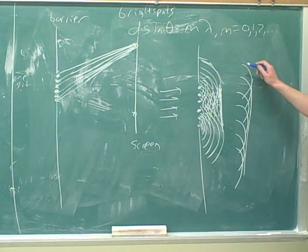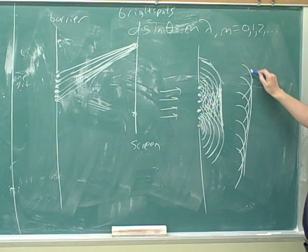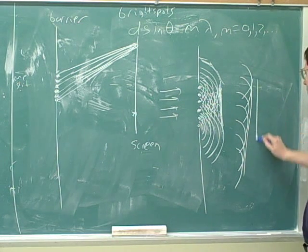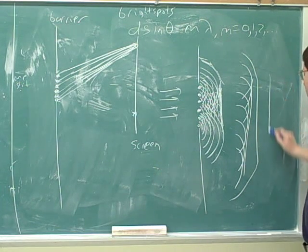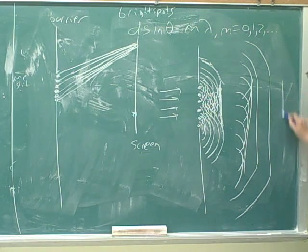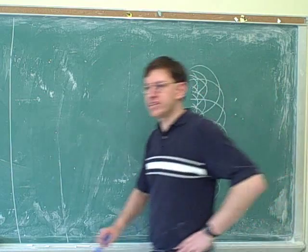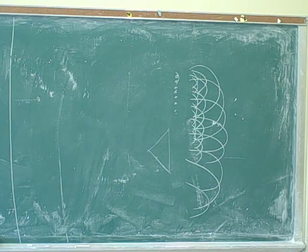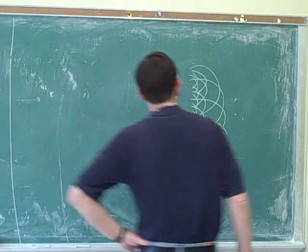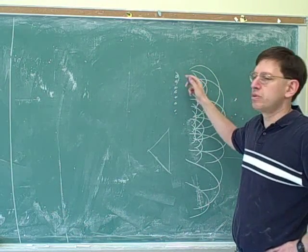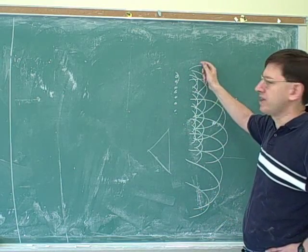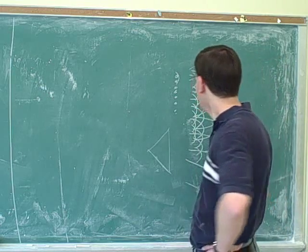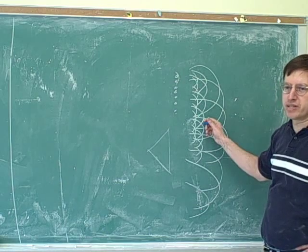Huygens' Principle becomes interesting at the end of the wavefront. Because at the end, there are no adjacent spheres, and you actually get a circular wavefront. As the wavefront moves out, there's more and more curving at the edges. For example, if the lights were off in here but you opened the door, light from the hallway would still reach all parts of the room — because waves bend around obstacles. This is one of the consequences of the spherical wavefront principle from Huygens' Principle.